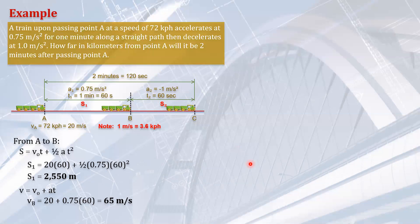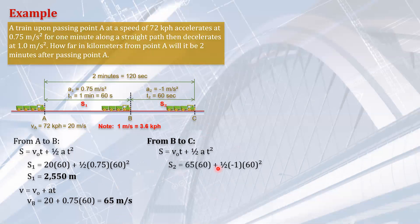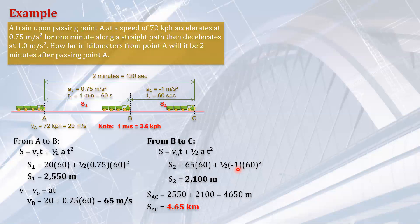Now let's go to the motion from B to C. We are solving for distance S2. The initial velocity is 65 meters per second, the acceleration is negative 1, and the time is 60 seconds. Using S equals V₀t plus one-half at², that gives us 2,100 meters. Therefore, the total distance from A to C is 2,550 plus 2,100, which is 4,650 meters or 4.65 kilometers.